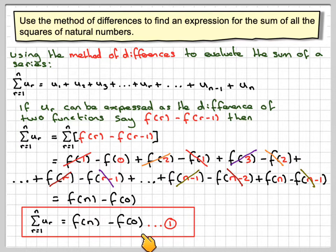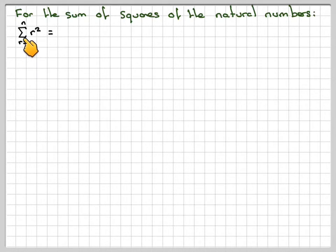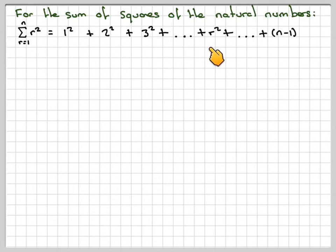So the sum from r=1 to n of u_r equals f(n) minus f(0). I'm going to call this equation 1 because I'll refer back to it. We're now going to use this to find the sum of the squares of the natural numbers. So it's the sum from r=1 to n of r², which is 1² plus 2² plus 3², plus the general term r², plus (n-1)², plus the last term n².